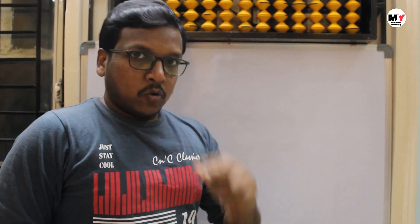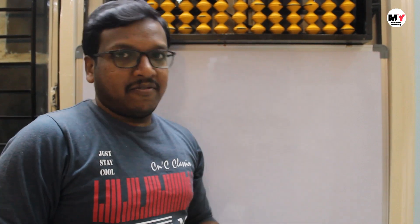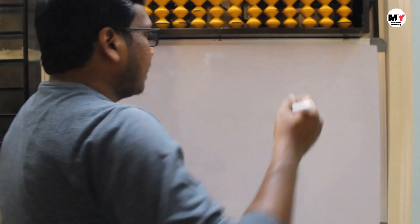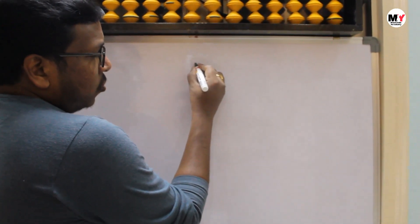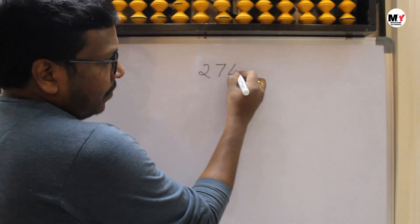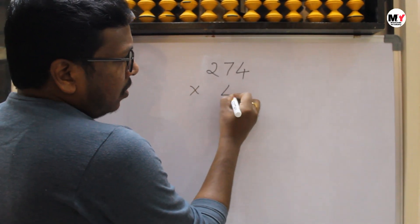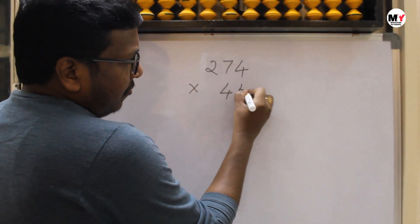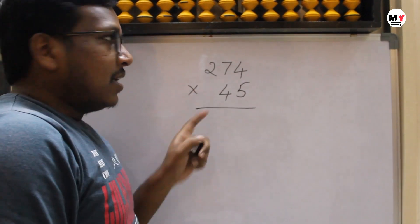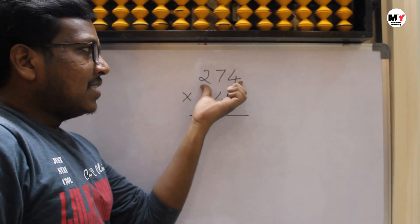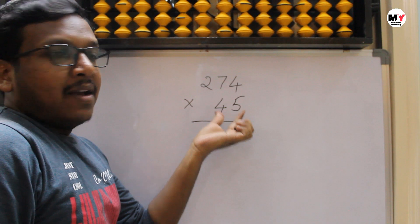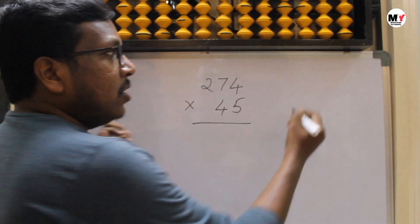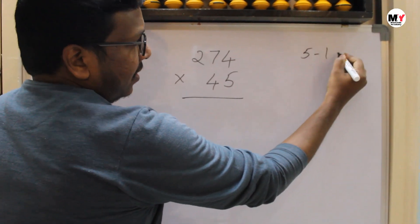We have learnt two digit into two digit and three digit into three digit. Now let's see three digit into two digit multiplication. The number is 274 multiplied by 45. Total how many digits? Three plus two is five. Five minus one — four steps we are going to get here.